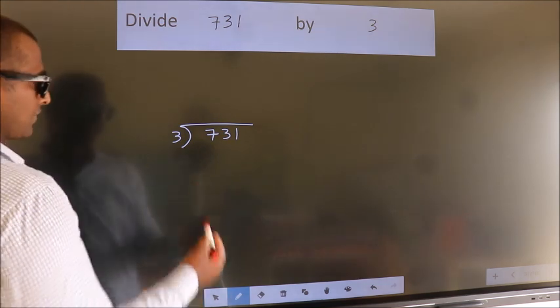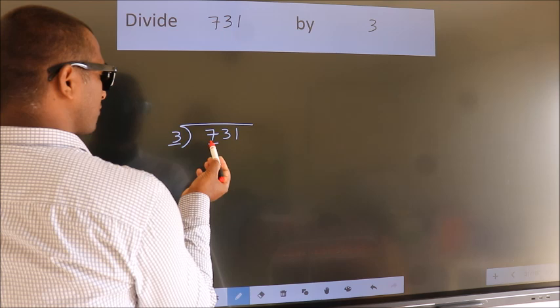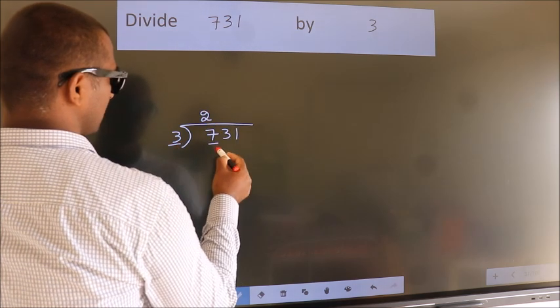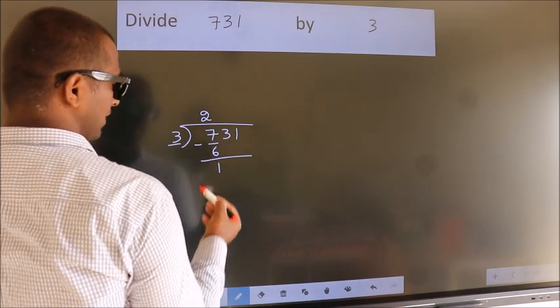Next. Here we have 7. Here 3. A number close to 7 in 3 table is 3 2's 6. Now we should subtract. We get 1.